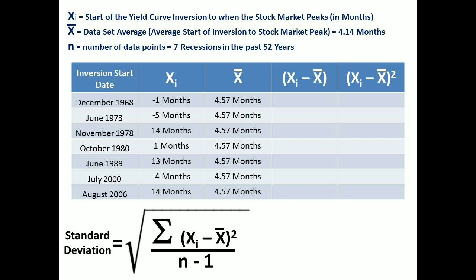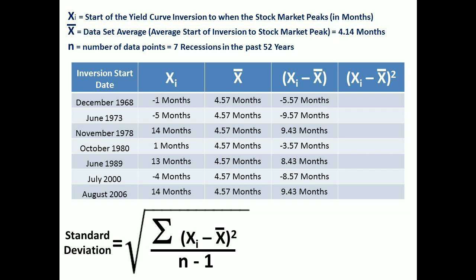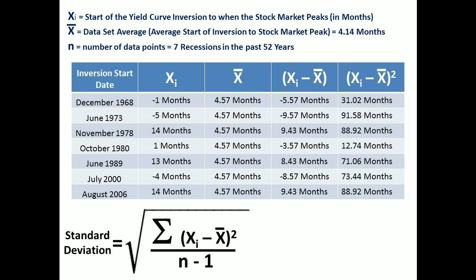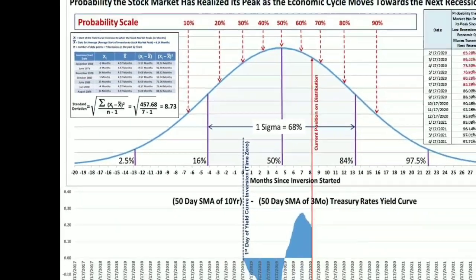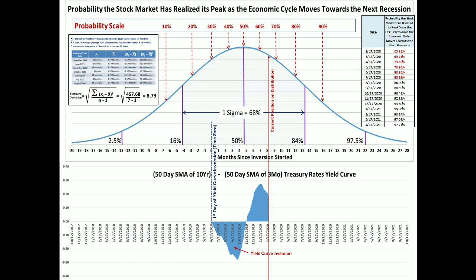Calculating the difference between the observations and the sample mean, then squaring each of those differences, and adding up the rightmost column gives a total of 457.68, which is substituted into the standard deviation equation. Since the number of data points is seven, the standard deviation is calculated at 8.73 months. From this we can construct a bell curve centered on its mean value of 4.57 months with a standard deviation of 8.73 months.